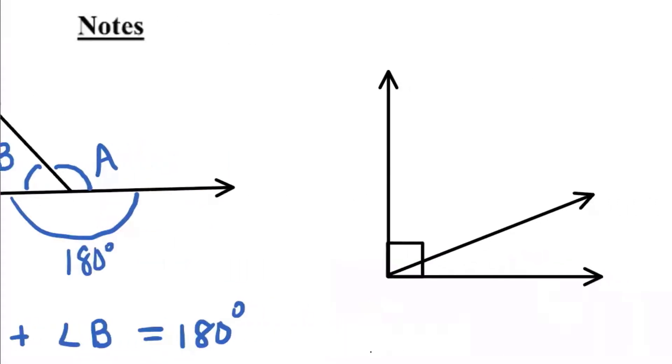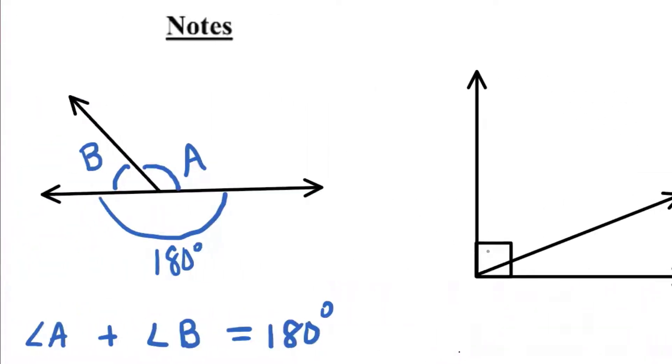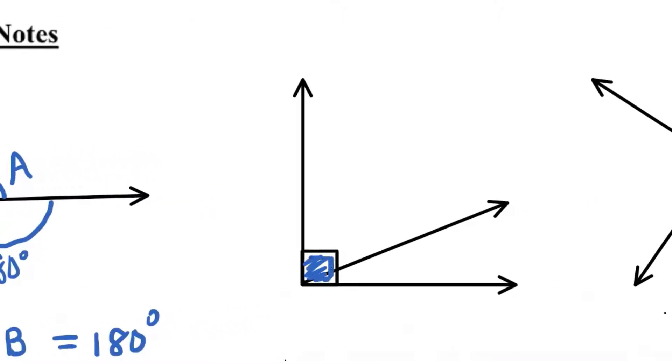Let's look at the next diagram over. What kind of angle is this that we indicate with a square like that? What does that mean? 90 degrees. And what's another name for a 90 degree angle? This is called a right angle.